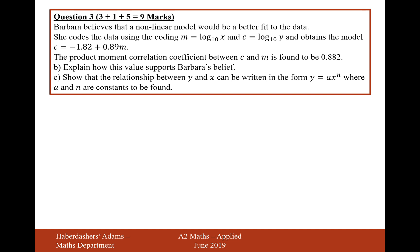Moving on to part B and part C. Barbara believes that a non-linear model would be a better fit to the data. She codes the data using the coding of M equals log 10 of X and C equals log 10 of Y, and obtains the model C equals minus 1.82 plus 0.989M. The product moment correlation coefficient between C and M is found to be 0.882, much better correlation because it's closer to 1.